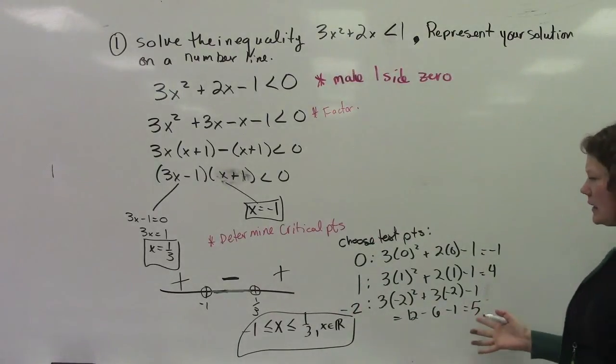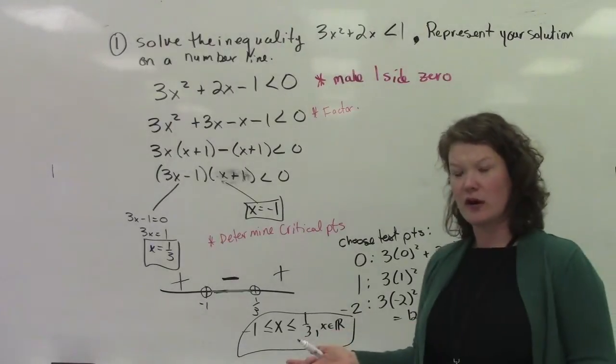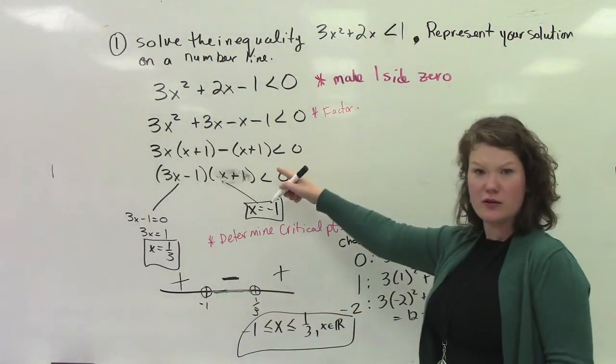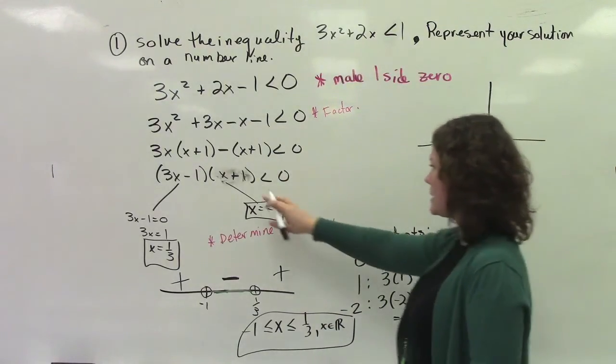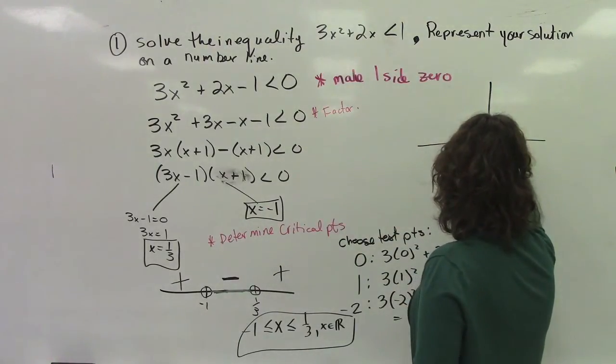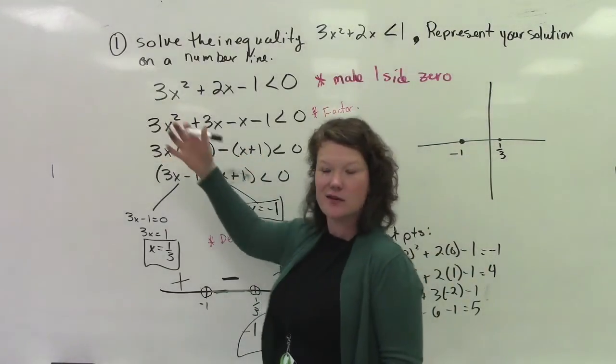I just want to connect this with the broader stuff that we've been doing before. I want us to connect with the graph. So if I were to make a real quick sketch of this, I would say, okay, so my 0s are at negative 1 and positive 1 third. And I know that since the a is positive, it's going to be opening up.